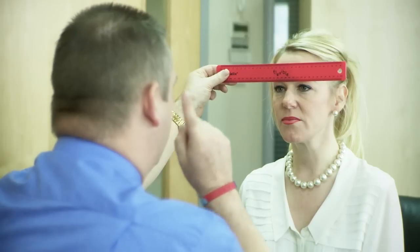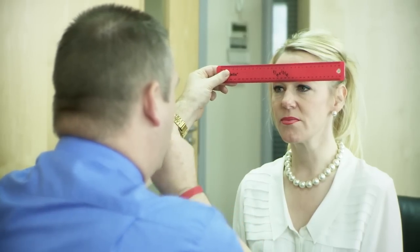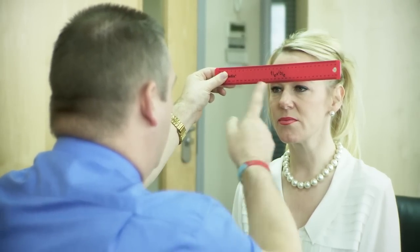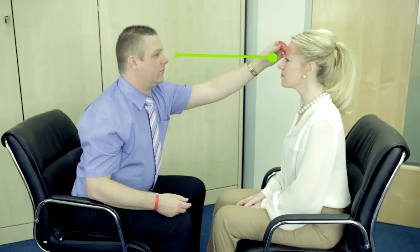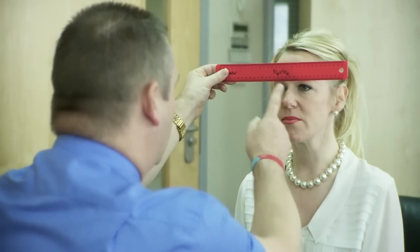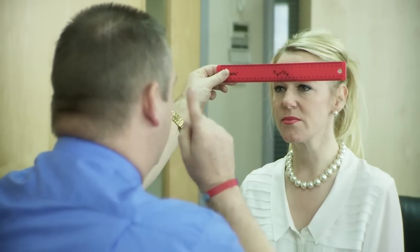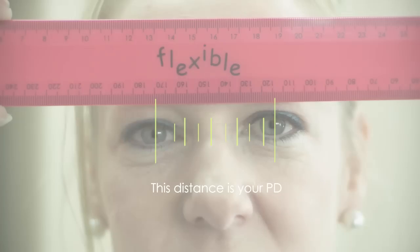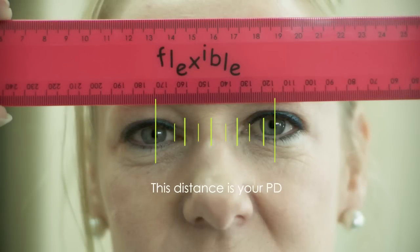Without moving the ruler, the person taking the measurement should close their left eye and use their open right eye to look into your left eye directly opposite. Make sure you are looking directly ahead into their open eye as you are being measured. Repeat the process several times until you are happy with the accuracy of the results. Remember to keep your head perfectly still as you are being measured.